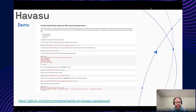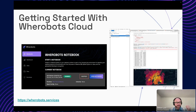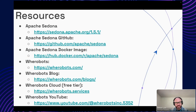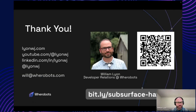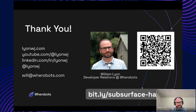That was a quick demo. The code is linked there if you'd like to check it out. If you'd like to get started with Havasu today, you can sign up for a free Wherebots Cloud account, which gives you access to all the functionality we looked at today. There are also good resources for getting started on the slide. You can grab the link to the slides and scan that QR code to find any of the links you're looking for.